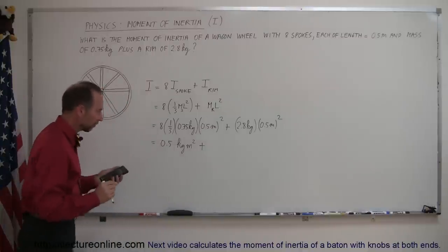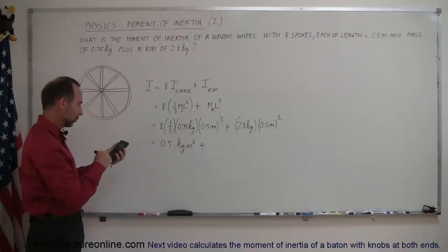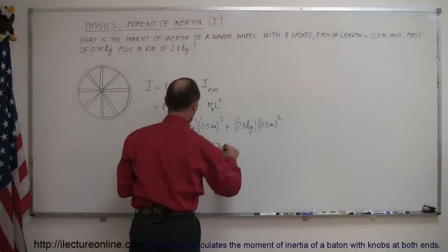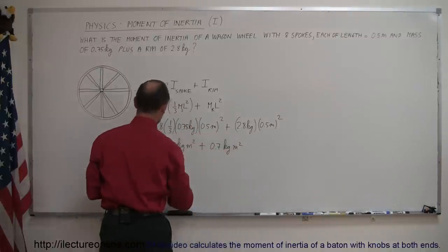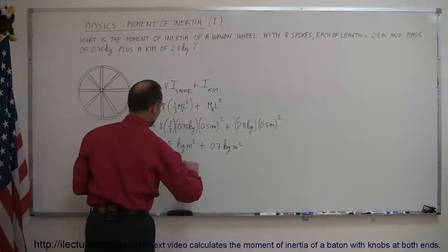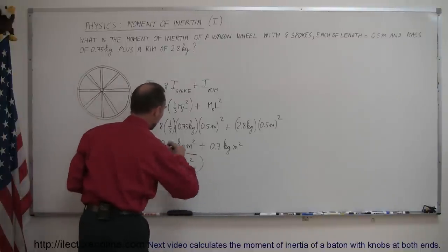Plus the moment of inertia of our wagon wheel, of the rim of the wagon wheel, so 0.5 squared times 2.8 equals 0.7 kilograms meters squared. And adding that together, that would be 1.2 kilogram meters squared for the moment of inertia of the entire wagon wheel.